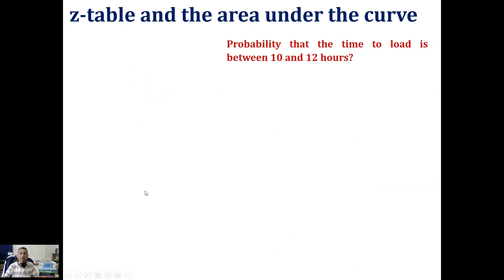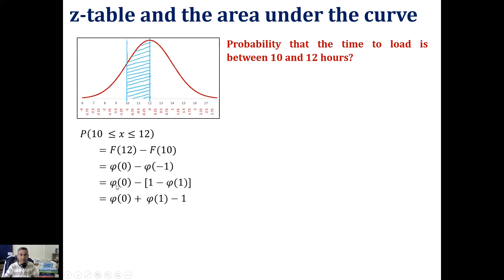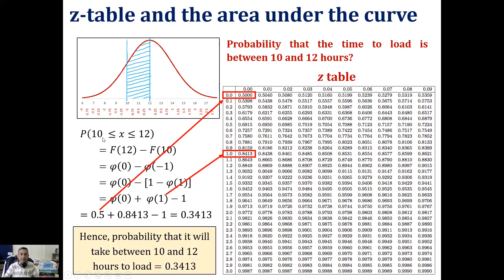For part (b), the probability that the loading time is between 10 and 12 hours is P(10 ≤ x ≤ 12) = F(12) - F(10) = Φ(0) - Φ(-1) = Φ(0) - (1 - Φ(1)) = Φ(0) + Φ(1) - 1. From the z table, Φ(0) = 0.5 and Φ(1) = 0.8413, giving 0.3413. So the probability that loading takes between 10 and 12 hours is 0.3413.